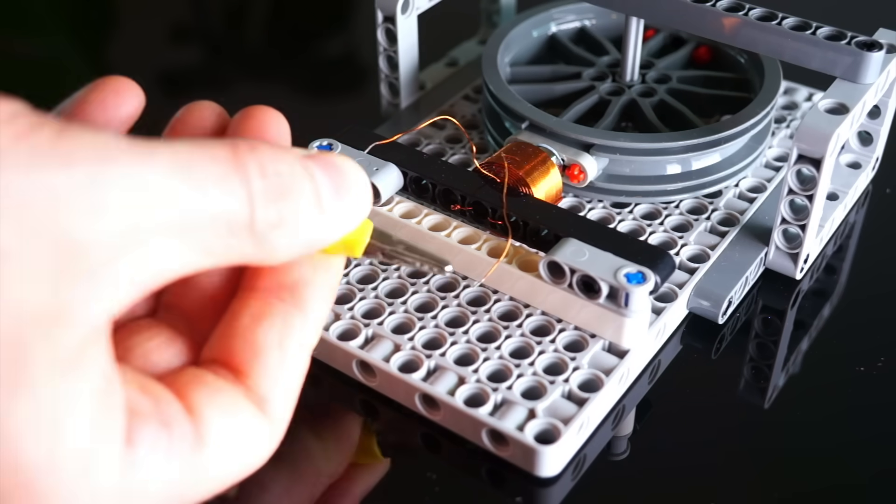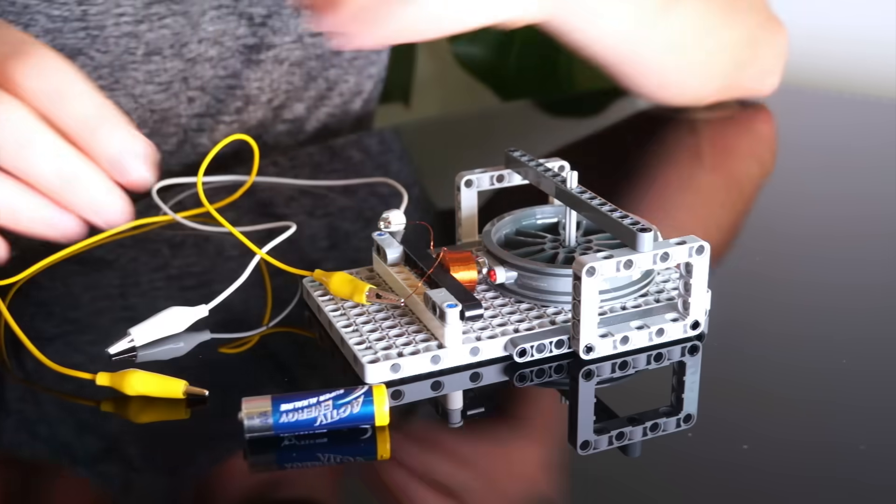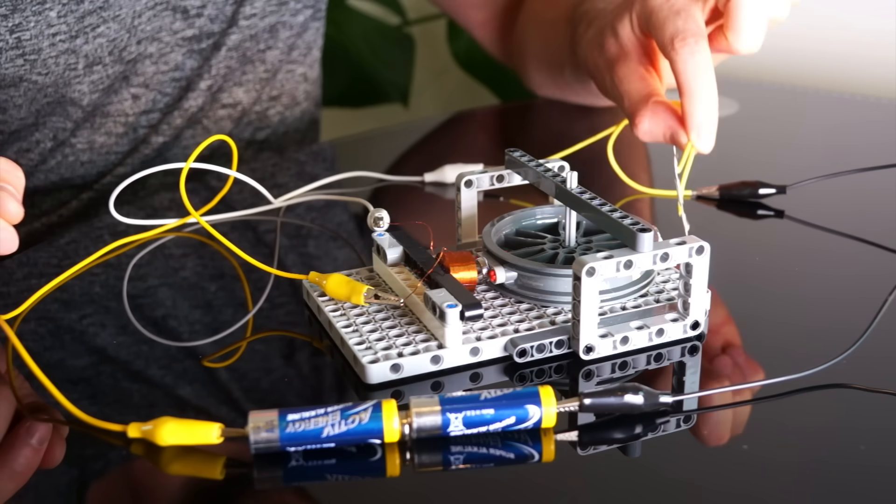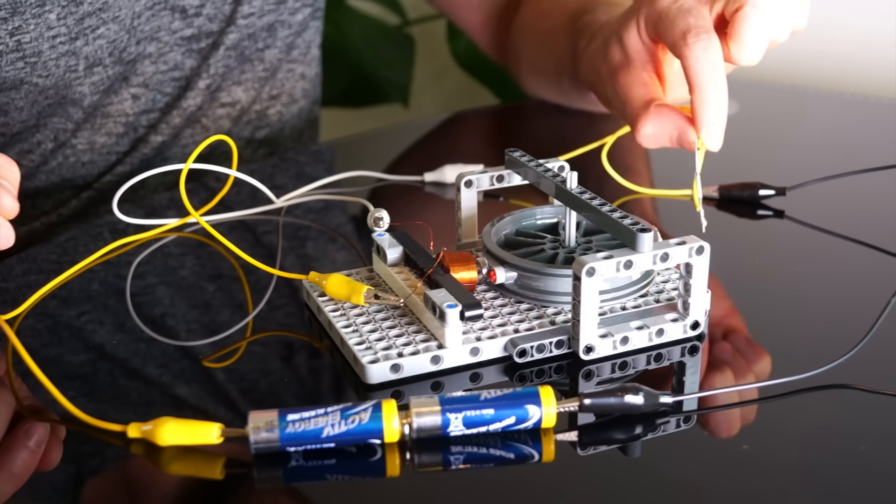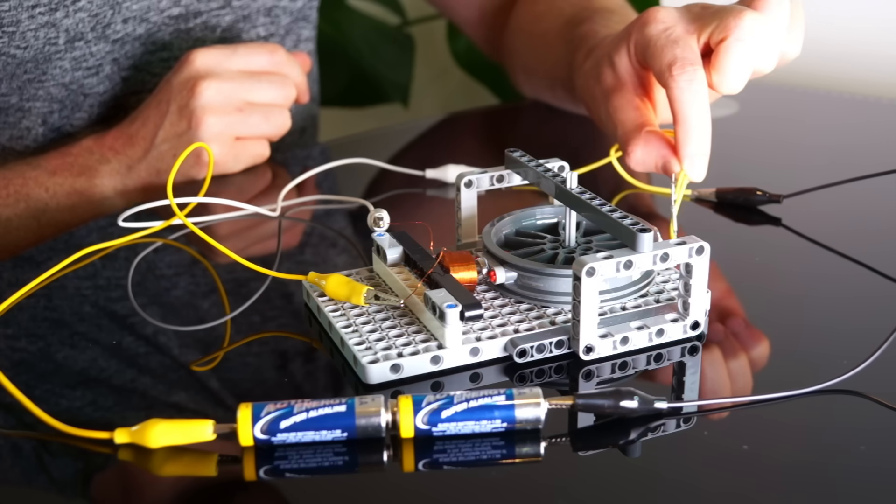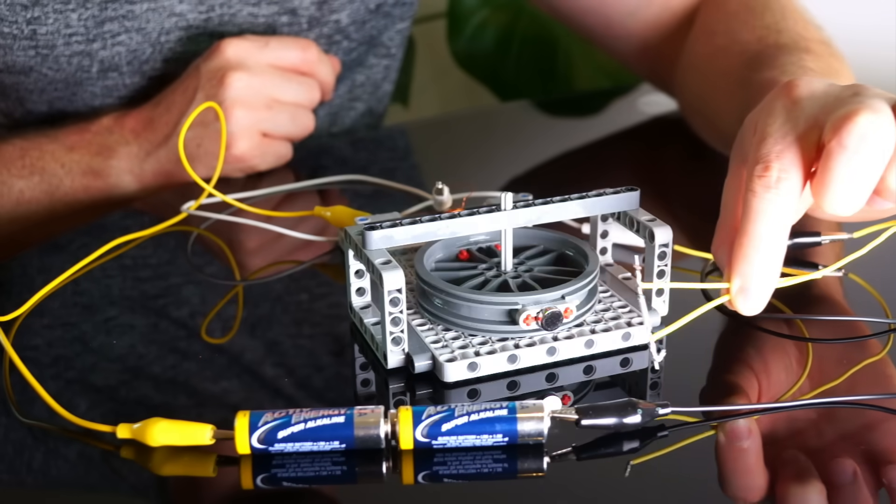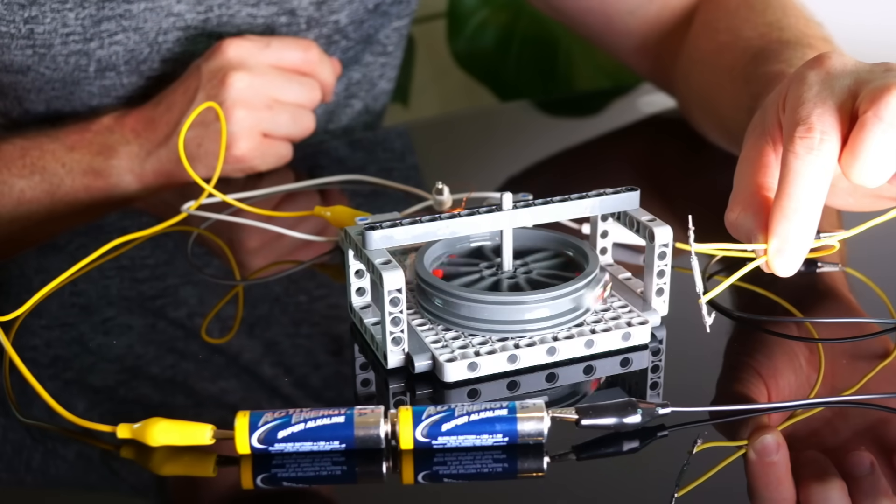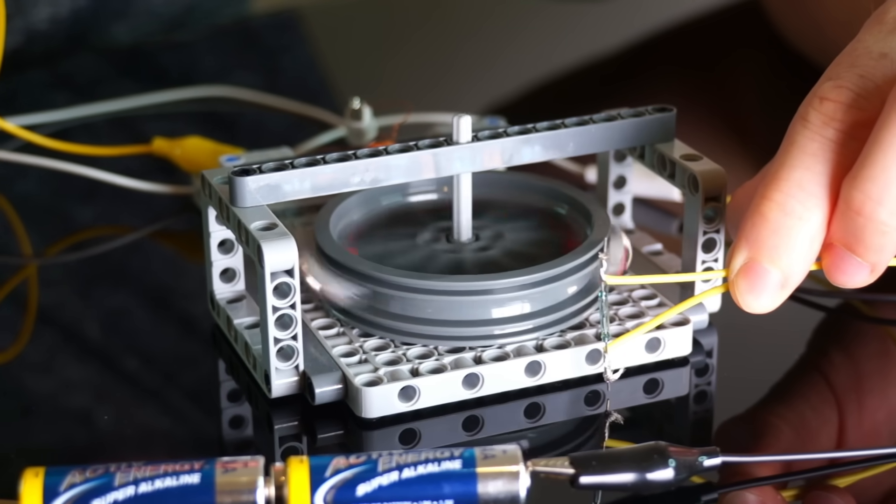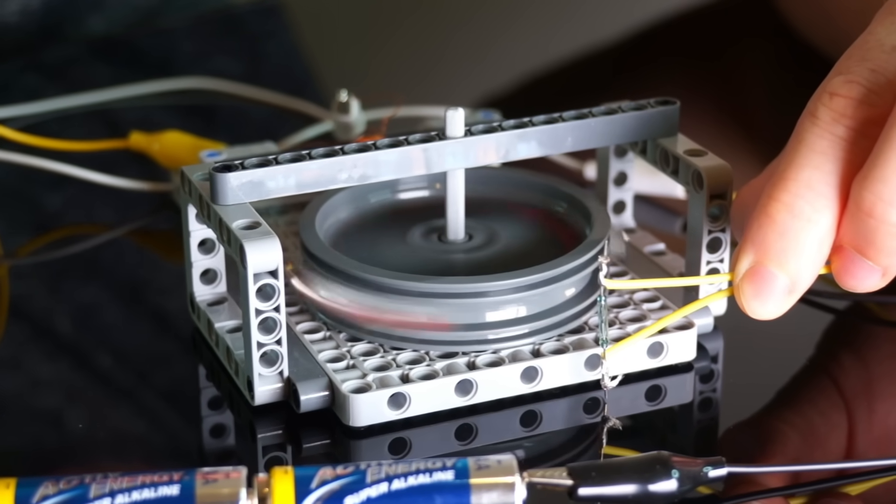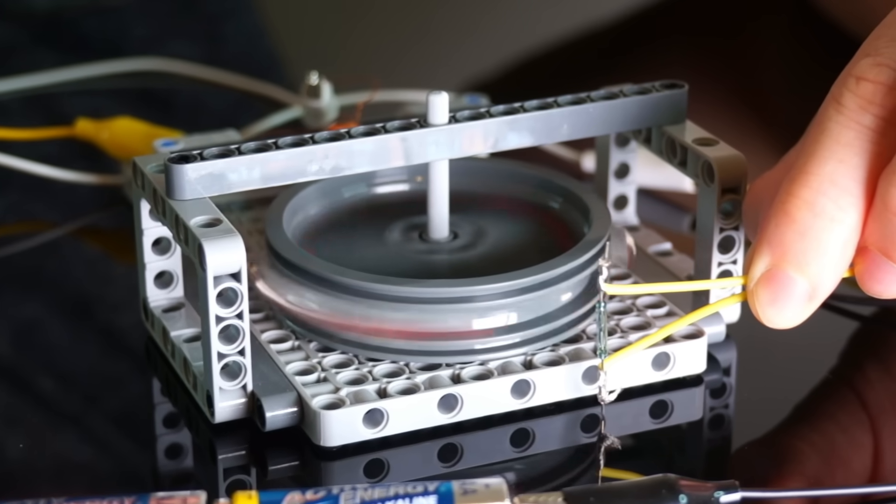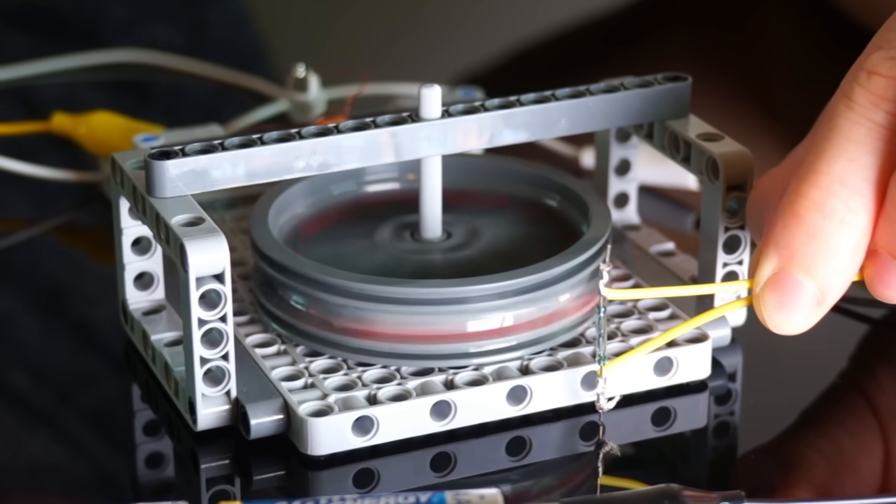If I hook up the reed switch to the coil and battery like this, and then bring the switch near the magnet, nothing happens because I've got the polarity of the battery wrong. Swap it around, and now the coil will push the magnet away. And if I position it just right, every rotation will cause the switch to turn off until the magnet aligns with both it and the coil, causing a brief pulse which kicks the magnet around for another rotation.